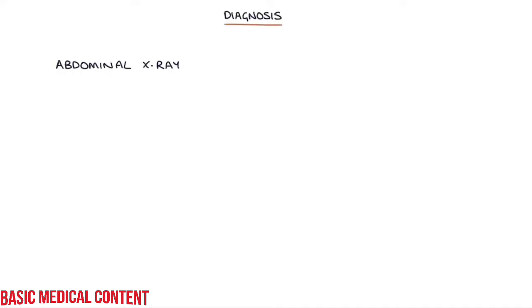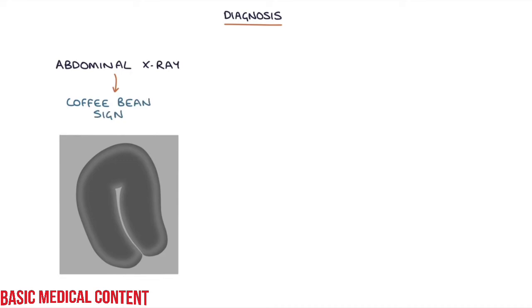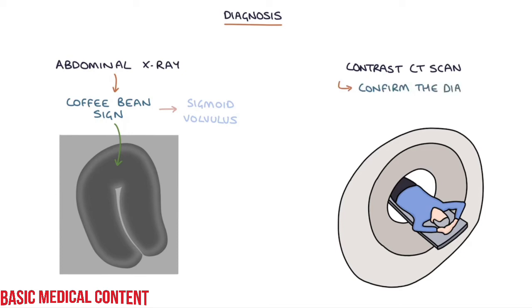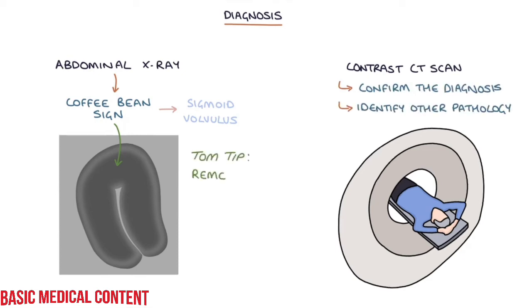Abdominal x-ray can show the coffee bean sign in sigmoid volvulus, where the dilated and twisted sigmoid colon looks like a giant coffee bean. A contrast CT scan is the investigation of choice to confirm the diagnosis and identify other pathology. Remember the coffee bean sign for your MCQ exams — it's worth looking up photographs so that you can recognise it and immediately know the diagnosis, which is a sigmoid volvulus if it comes up.